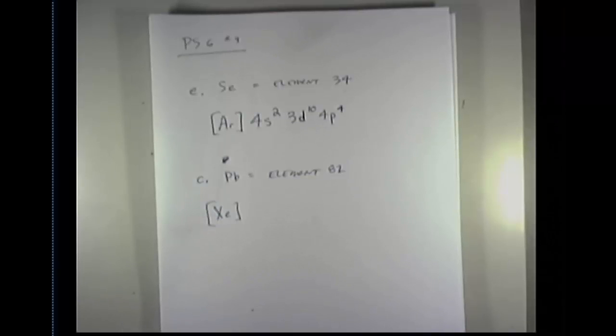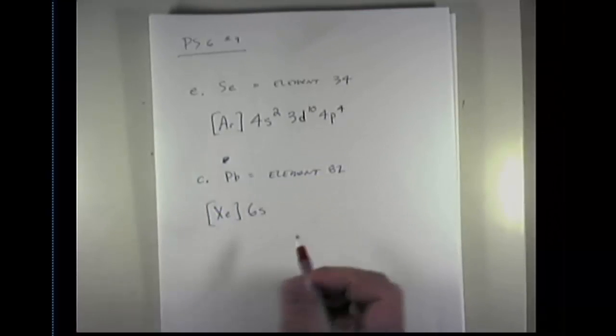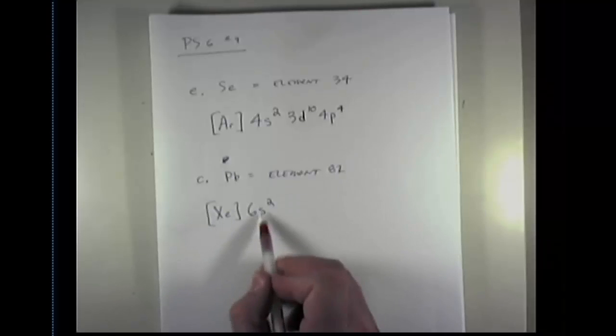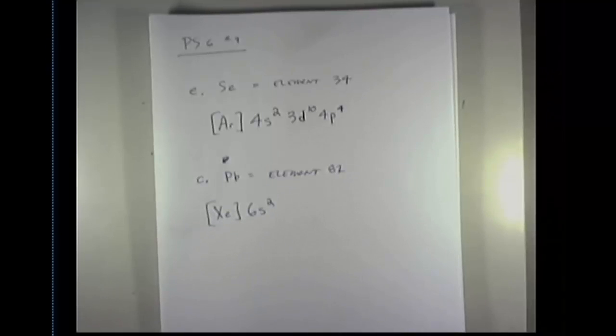And now all I need to do is write the remaining electron configuration between xenon and lead. So the next element after xenon is element 55, cesium. Cesium is in row 6. So it has a 6s. If I count up cesium 55, barium 56, that corresponds to two electrons. So 6s2. Now one thing that can be confusing is remembering that the next element in the periodic table after barium is not element 71. It's actually element 57, which is down here in the F block, which is frequently and typically shown underneath the periodic table here, or underneath the D block in the periodic table. So these are the lanthanides.